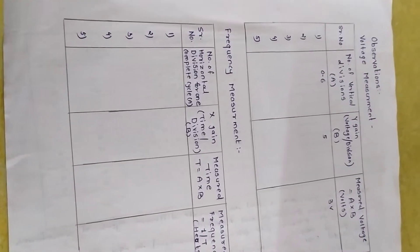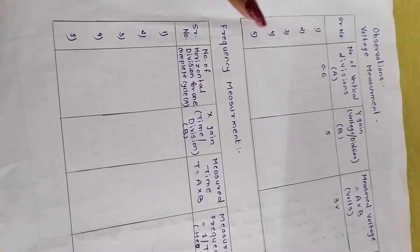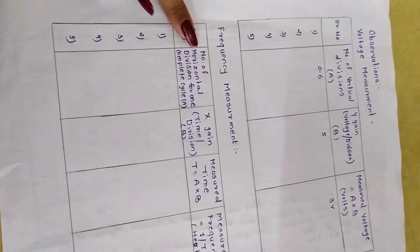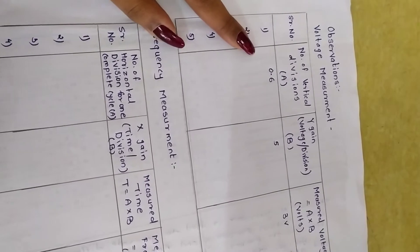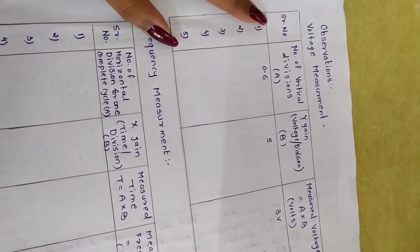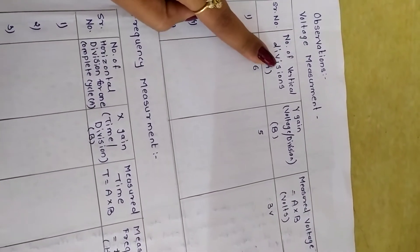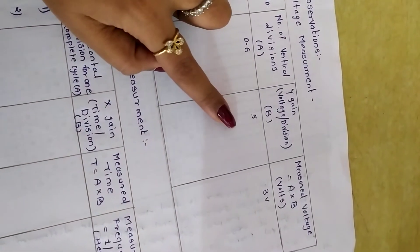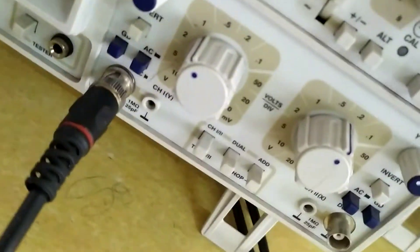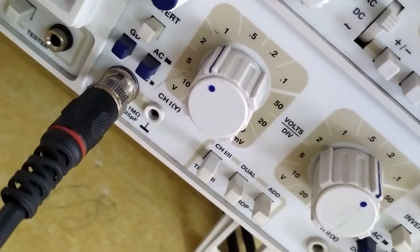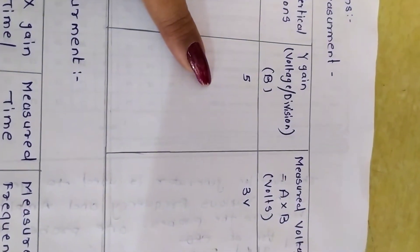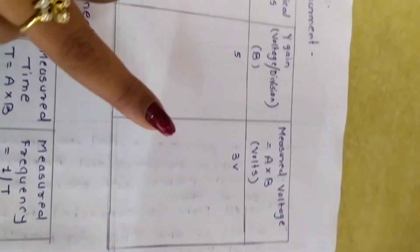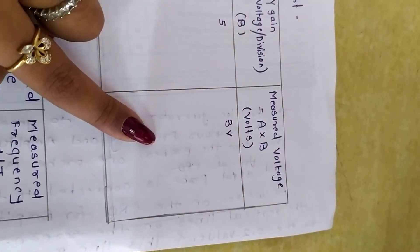This is the observation table for voltage — that means amplitude measurement — and this is the frequency measurement table. First, we will start with amplitude measurement. The table has the number of vertical divisions, and the voltage per division knob value. This value is written in voltage per division, and the multiplication of A and B gives the actual amplitude value.